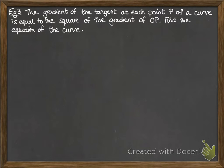Okay, here we've got something in context. So the gradient of the tangent at each point P of a curve is equal to the square of the gradient of OP, O being the origin. Find the equation of the curve.